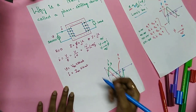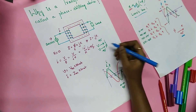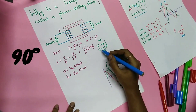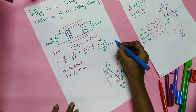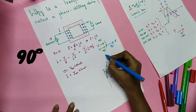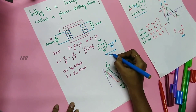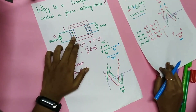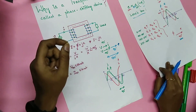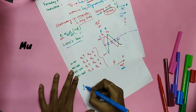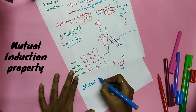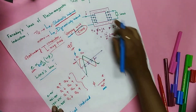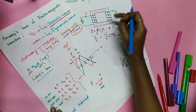So EMF is displaced from flux by 90 degrees. Coming back: current is displaced from voltage by 90 degrees, flux is displaced from voltage by 90 degrees, and EMF is displaced from flux by another 90 degrees — giving a total displacement of 180 degrees from E to V. This E is the induced EMF in the primary winding due to self-induction. There is also a mutually induced EMF, E2, induced in the secondary winding due to current flow in the primary.